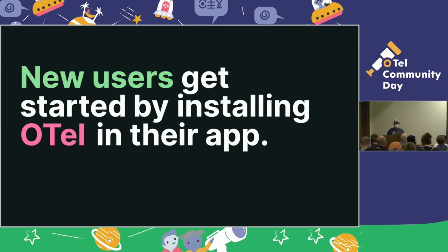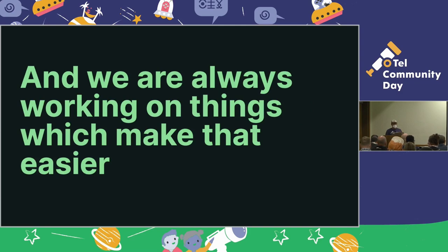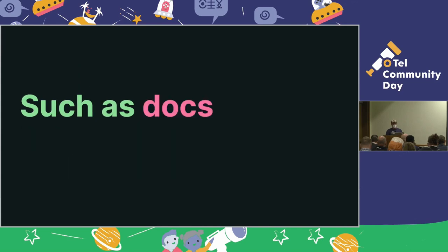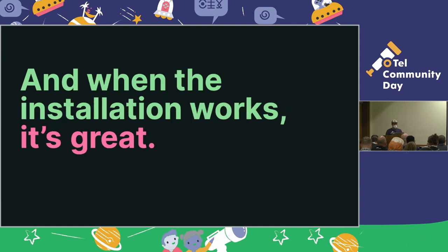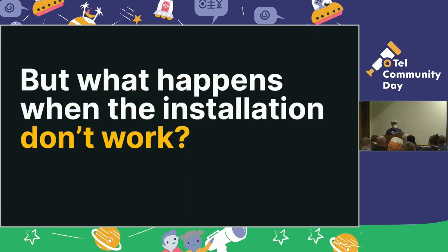So what's the deal? New users get started by installing OpenTelemetry in their app — this is where everyone starts. We're always looking for ways to make it easier for people to install the OpenTelemetry clients, like improving the docs, various kinds of automation. And when the installation works properly, it's great. It's super smooth. But what happens when the installation doesn't work?